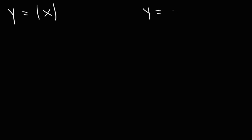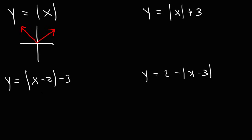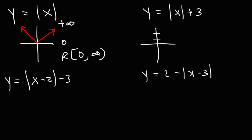Now let's move on to absolute value functions. For y equals the absolute value of x, this forms a V-shape. The lowest y value is 0 and the highest is infinity, so the range is from 0 to infinity. For y equals the absolute value of x plus 3, it's shifted up 3 units but still opens upward, so the range goes from 3 to infinity.